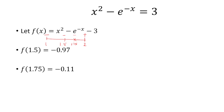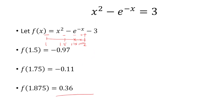So again, we just take the midpoint. The midpoint between 1.75 and 2 will be 1.875, and that's going to be a positive value. So it doesn't make sense to consider 2 anymore. We want to consider the smallest interval where one endpoint is positive and the other is negative, so that's going to be 1.75 and 1.875.